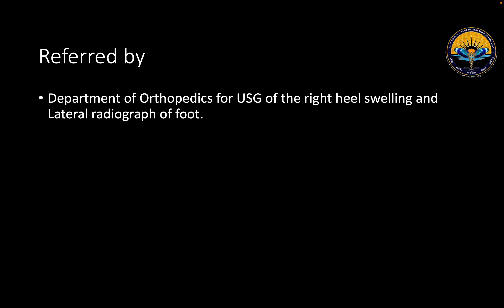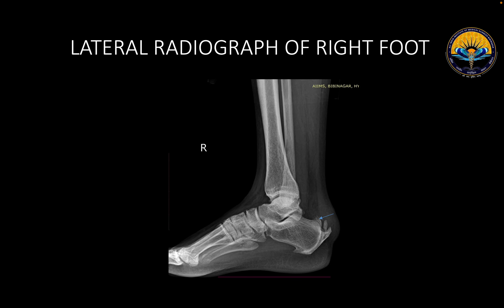The case was referred from the department of orthopedics, and we did the lateral radiograph of the right ankle. We could see that the interface between the anterior margin of the Achilles tendon and the pre-Achilles tendon fat is slightly blurred near its insertion site. There is also an increased bursal prominence over the posterior aspect of the calcaneum.